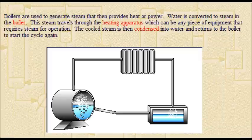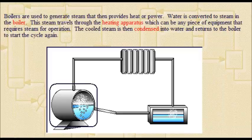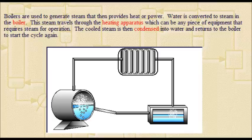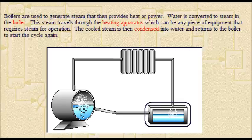Water is converted to steam in the boiler. This steam travels through the heating apparatus, which can be any piece of equipment that requires steam for operation. The cooled steam is then condensed into water that returns to the boiler to start the cycle again.